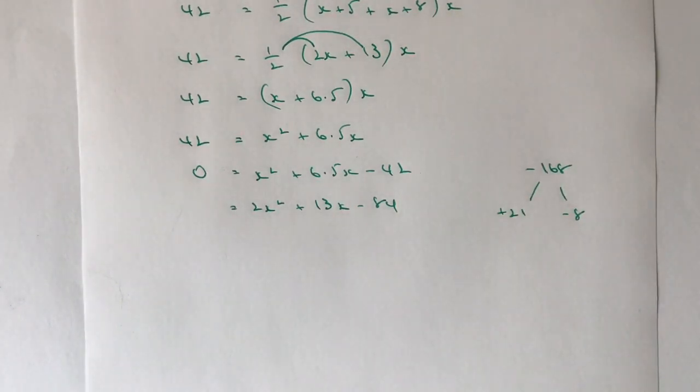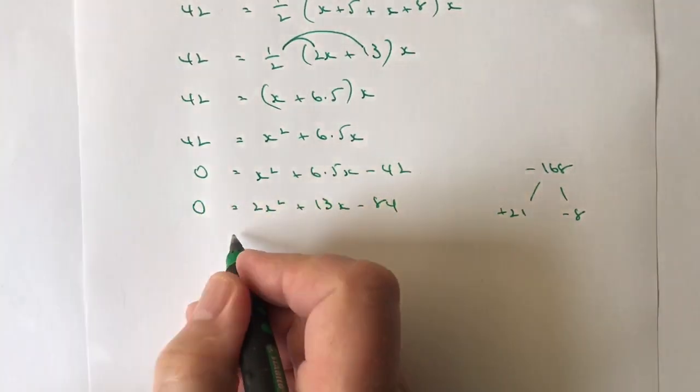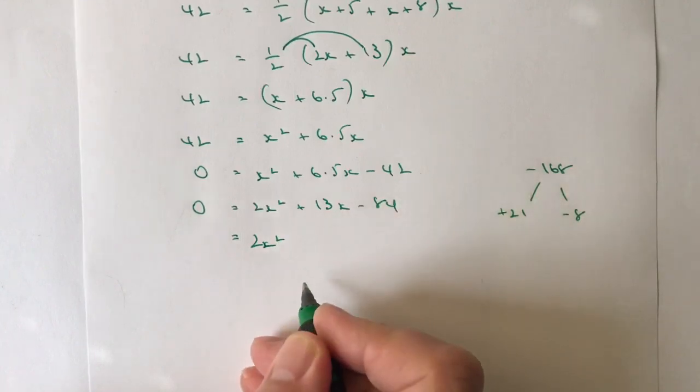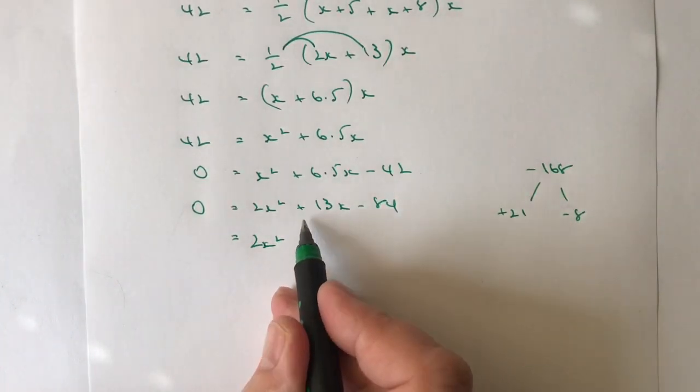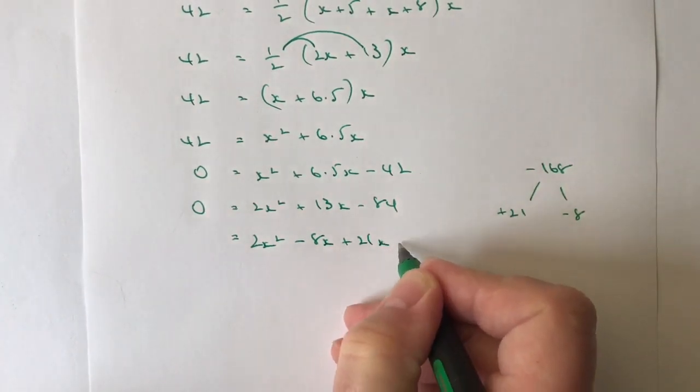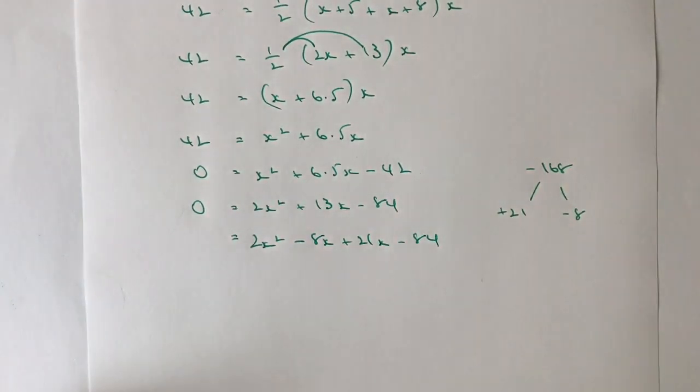So now I can rewrite this equation and I can rewrite it in the form of 2x squared. And rather than writing 13x, I'm going to write minus 8x plus 21x minus 84.